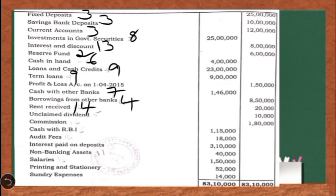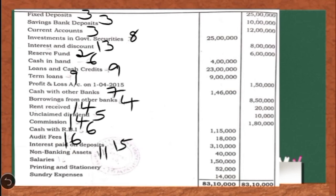Rent received goes in note number 14 under other income. Unclaimed dividend should be shown in note number 5 under other liabilities and provisions. Commission — since it has a credit balance it is commission received — goes in note number 14 under other income. Cash with RBI should be shown in note number 6. Audit fees go in note number 16 under operating expenses. Interest paid on deposits — where the bank has paid interest to customers — should be shown in note number 15 under interest expended. Non-banking assets go in note number 11 under other assets. Salaries, printing and stationery, and sundry expenses all go in note number 16 under other operating expenses.